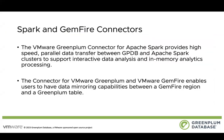We also have the Spark and Gemfire connectors. The VMware Greenplum connector for Apache Spark provides high-speed parallel data transfer between GPDB and Spark clusters. They support interactive data analysis, in-memory analytics processing, as well as continuous and batch pipelines. The connector for VMware Greenplum and Gemfire, on the other hand, enables users to have data mirroring capabilities between Gemfire and Greenplum.